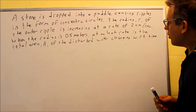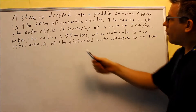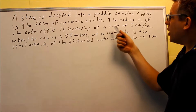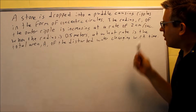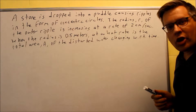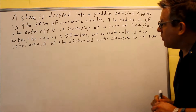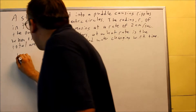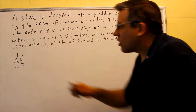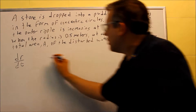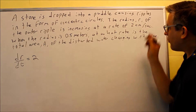A stone is dropped into a puddle causing ripples in the form of concentric circles. The radius of the outer ripple is increasing at a rate of 2 centimeters per second. That's the first number they give us. The rate involving the radius is going to be dr/dt — the rate at which r is changing with respect to time. They tell us that's equal to 2.